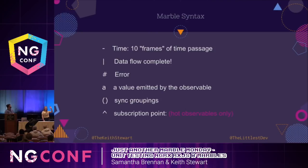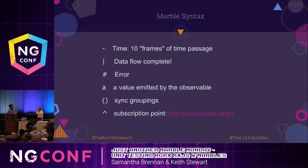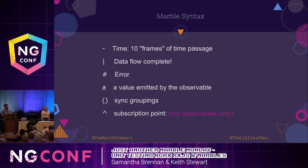Dashes represent a period of time, usually 10 frames, and a frame is equivalent to one millisecond. A pipe represents completion — at this point the observable would stop emitting values. The pound sign represents the dreaded error. Characters are variables which represent values emitted by the observable. You can use parentheses to group together functions that need to be executed synchronously. And the carrot represents a subscription point — this is only used in hot observables.